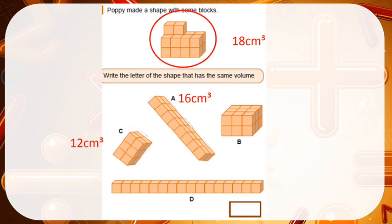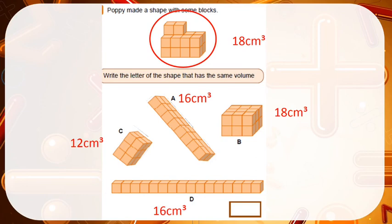For the next shape, I can see it is split into groups of 2 and I have 8 lots of those. 2 times 8 is 16, so that is 16cm cubed — again, not the same as the original. Shape D is a long row of cubes where there are 16 in total, so that also has a volume of 16cm cubed, not the same. Looking at B, I have 6 cubes facing me at the front and 3 rows going back, so 6 times 3 gives a volume of 18 — which means B is the shape with the same volume as the one Poppy made.